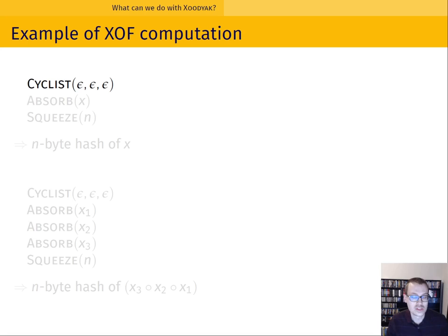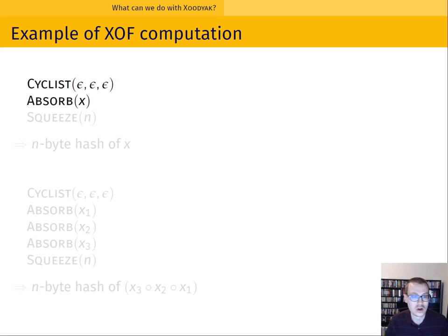Let's take a look at an unkeyed example. This example implements an extendable output function. You can see we start by initializing the cyclist object with no key. We then absorb an arbitrary byte string x, and then we squeeze an n-byte output. This n-byte output represents the hash of string x.